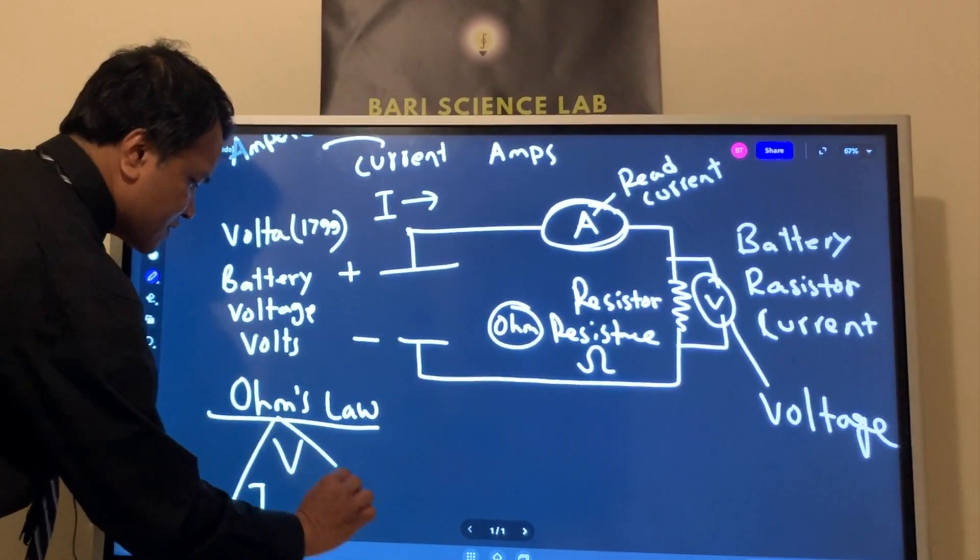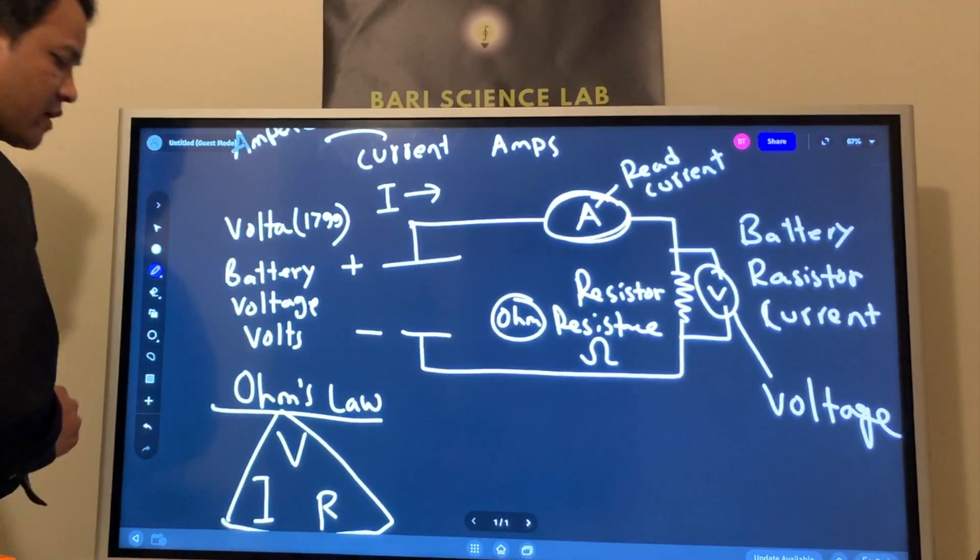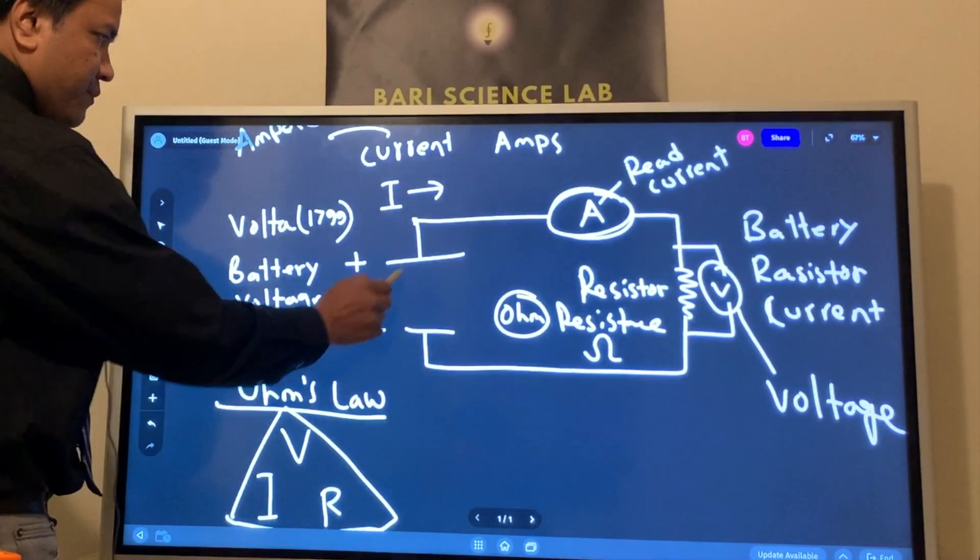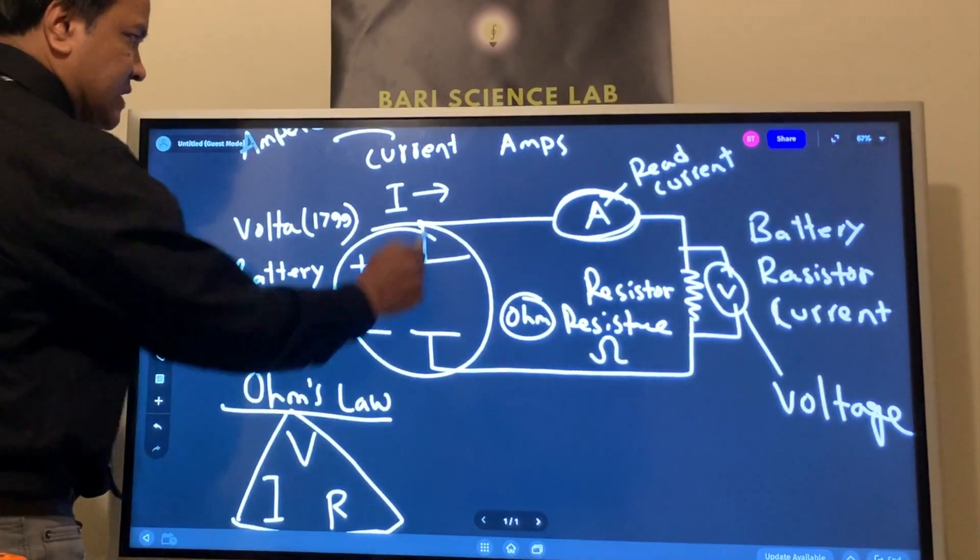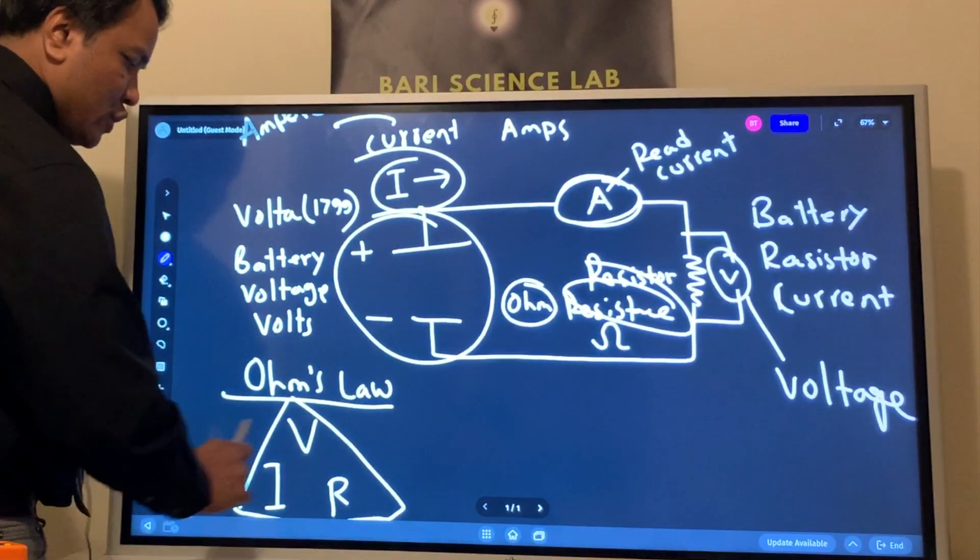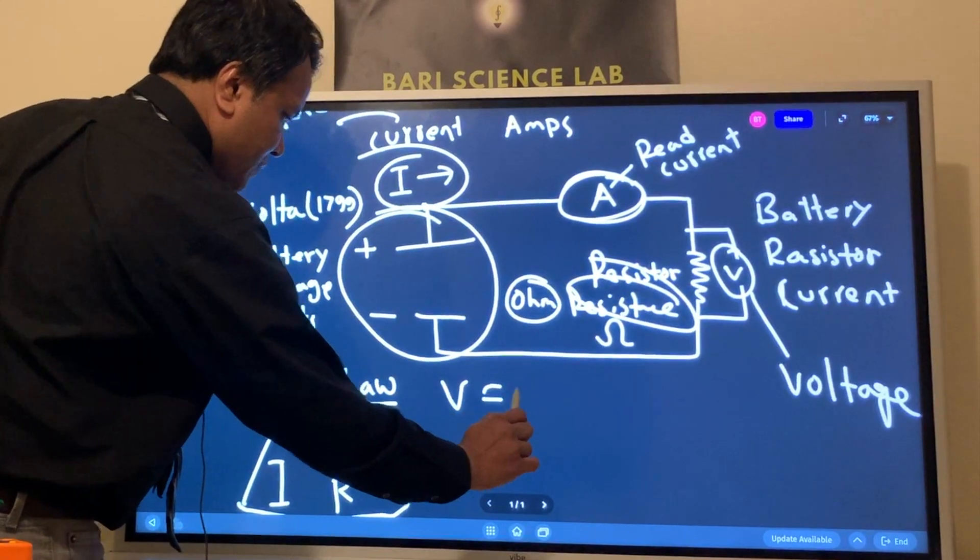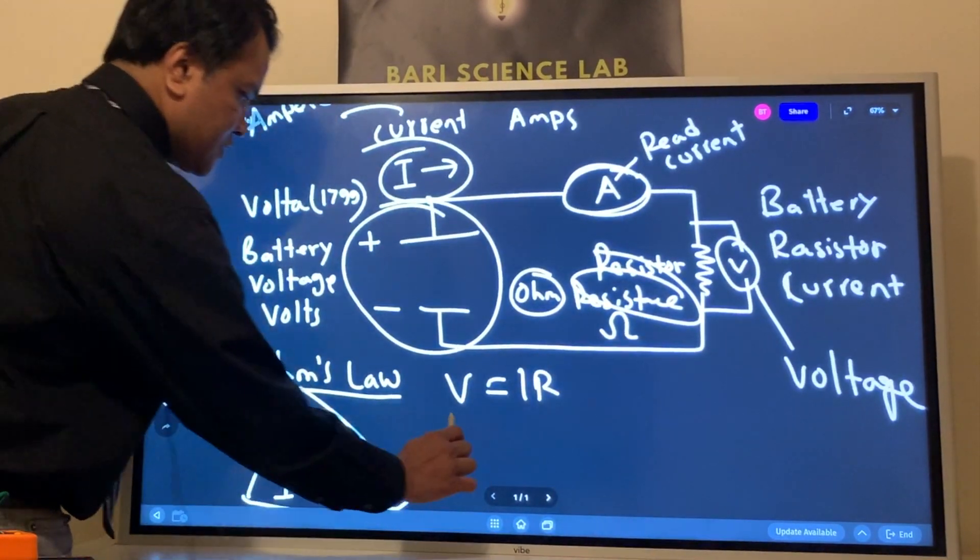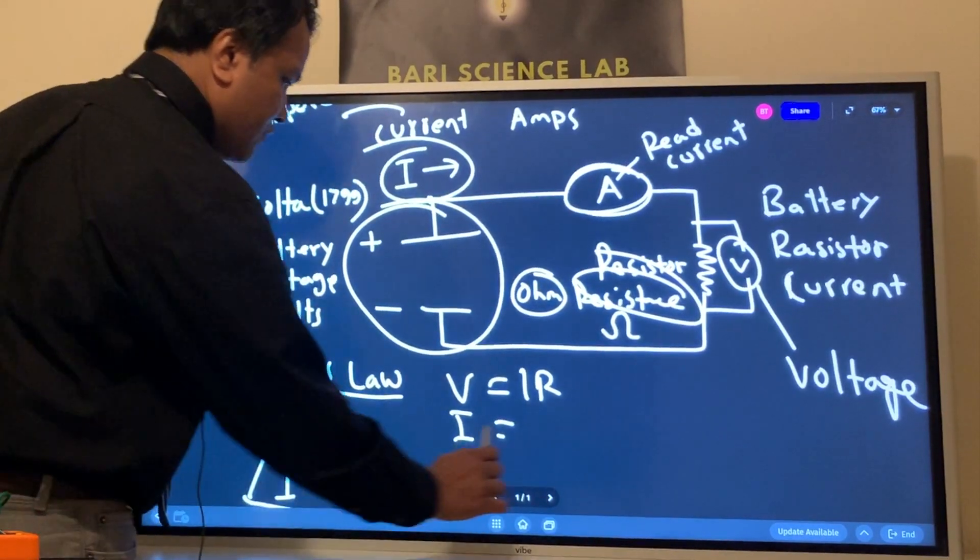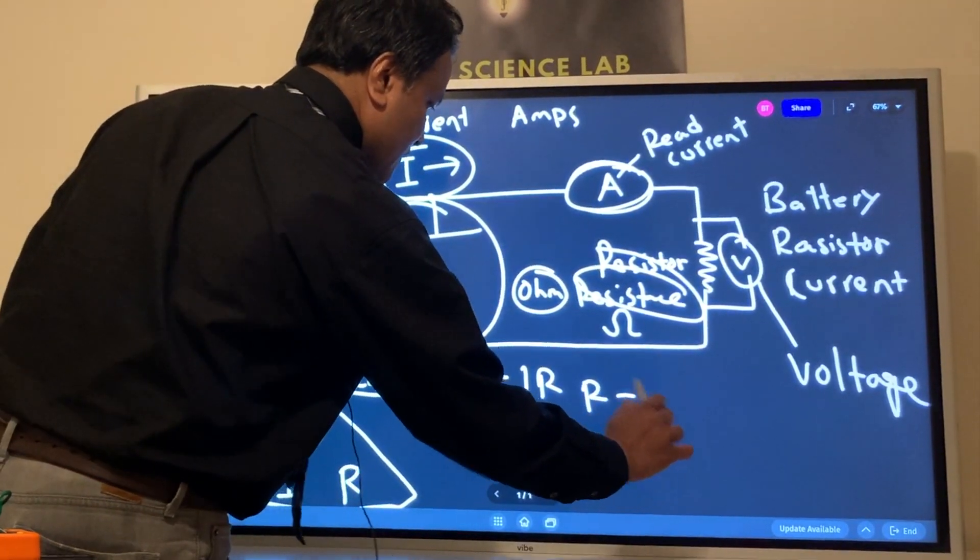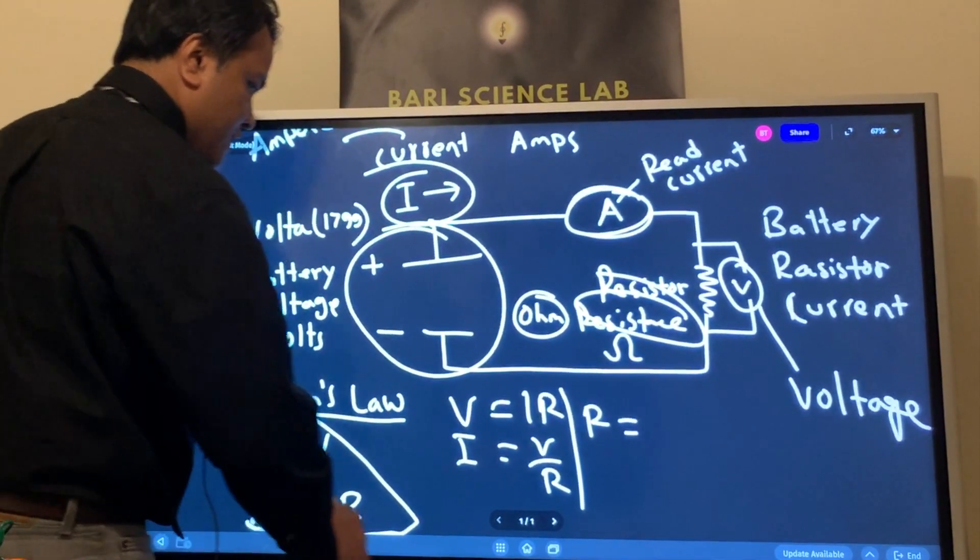This is a triangular relationship. This is a triangle. Voltage right here. Current right here. And the resistance right here. If you want to find the voltage, voltage is I times R. If you want to find the current, current is V over R. And if you find the resistance, resistance is V over I.